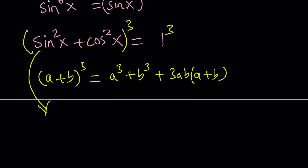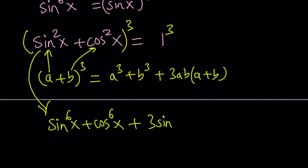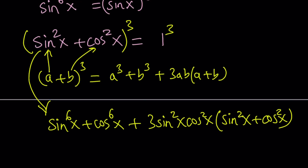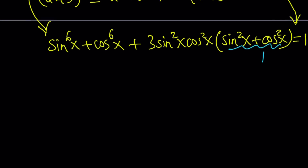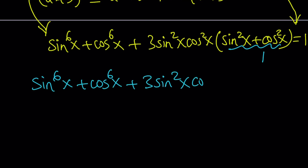From the binomial theorem, (a + b)³ can be written as a³ + b³ + 3ab(a + b). I find it more practical that way. Here a is sine squared x and b is cosine squared x. When I cube sine squared, it becomes sine x to the 6th power, plus cosine x to the 6th power, plus 3 times sine squared x times cosine squared x times (sine squared x plus cosine squared x). That inner expression equals 1, so it simplifies nicely.